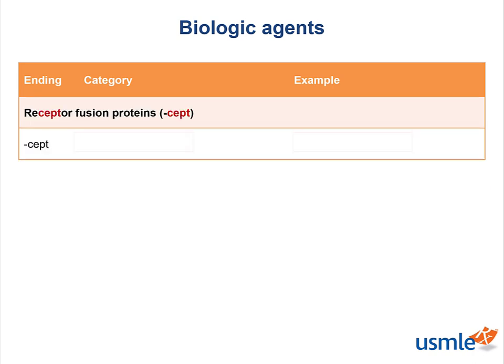Our next stem is 'cept', like in the TNF-alpha antagonist etanercept, which is a receptor fusion protein produced by recombinant DNA. Sometimes the mnemonic 'etanercept intercepts TNF' is used. Etanercept is used in rheumatoid arthritis, psoriasis, and ankylosing spondylitis.